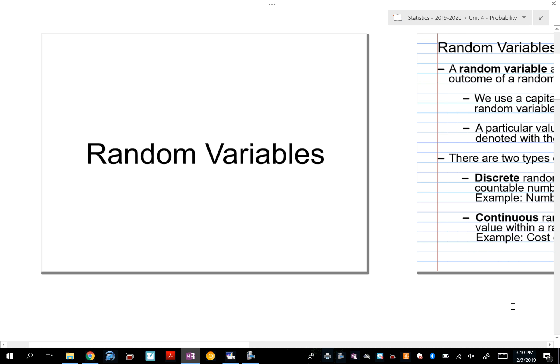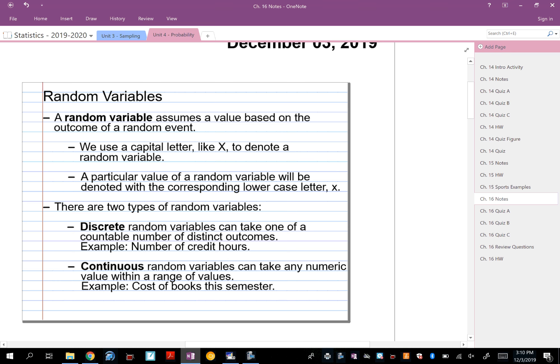Okay, so before you guys left on break, we were talking about probability. This chapter takes probability to a place where we have a random variable, and we define that random variable as either discrete or continuous.